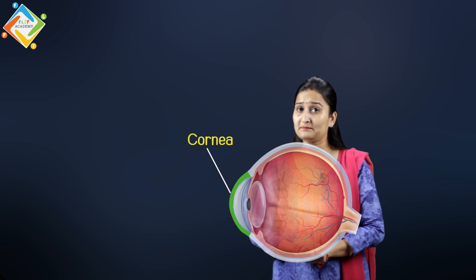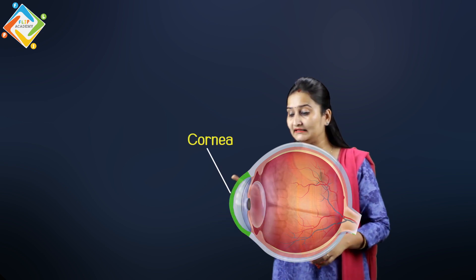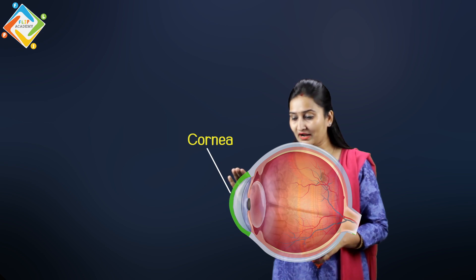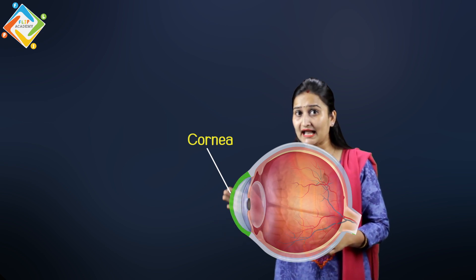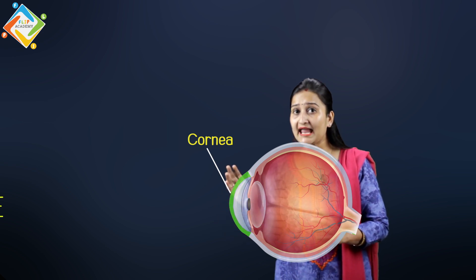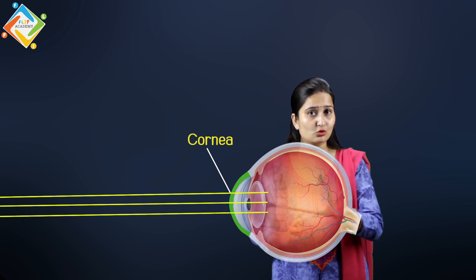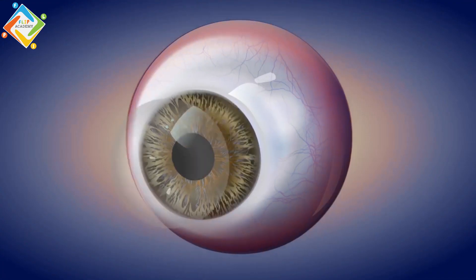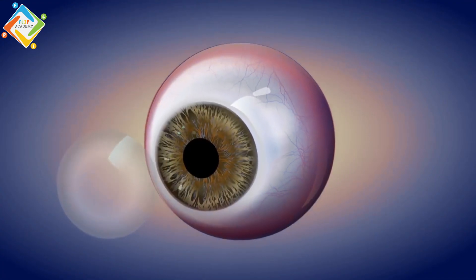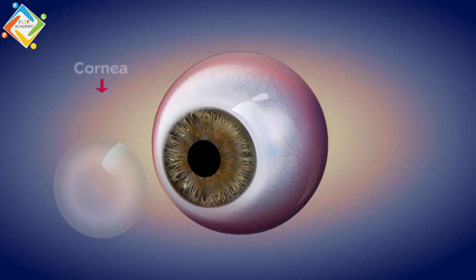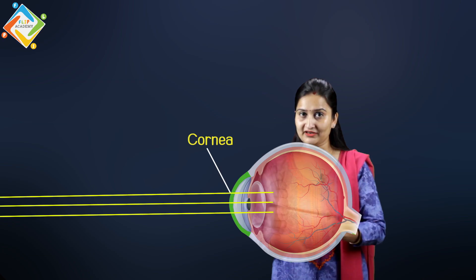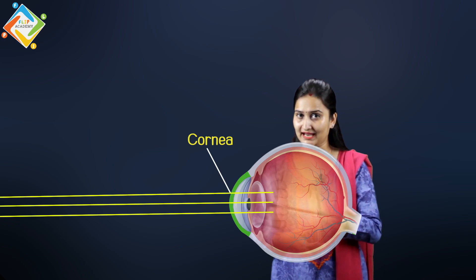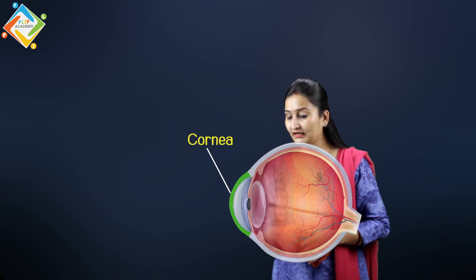The cornea is basically a transparent structure. The light enters our eyes through the cornea. We can say that the cornea is basically a window from where the light enters.